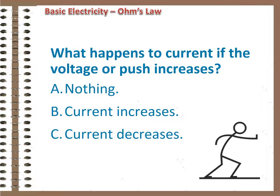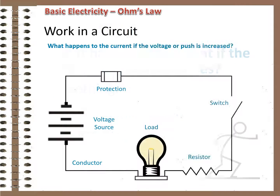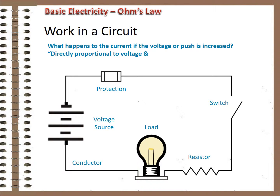What would happen to current if the voltage or push was increased? More voltage, more current. And less voltage, less current. It turns out that there's a constant, predictable relationship between voltage, current, and resistance in a circuit. Current in a circuit is directly proportional to voltage and inversely proportional to resistance.